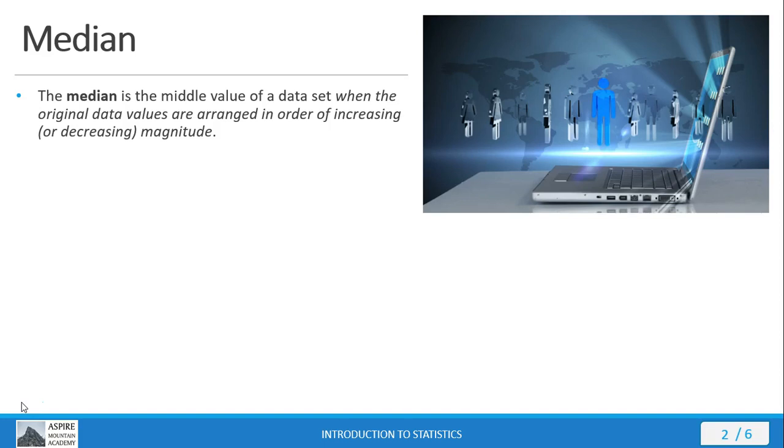This is the value in the data set that's right in the middle when the original data values are arranged in order from either smallest to largest or largest to smallest. It doesn't matter which way you order because either way your middle value is still in the middle. But the data set must be in order for you to find the median the old school way.